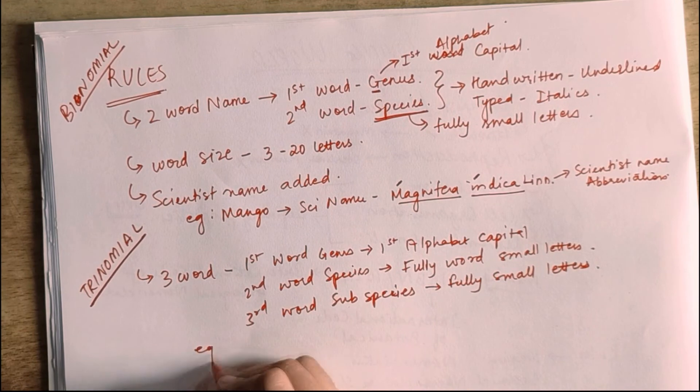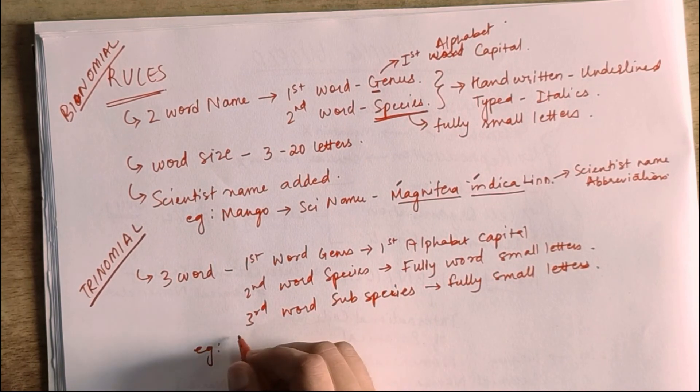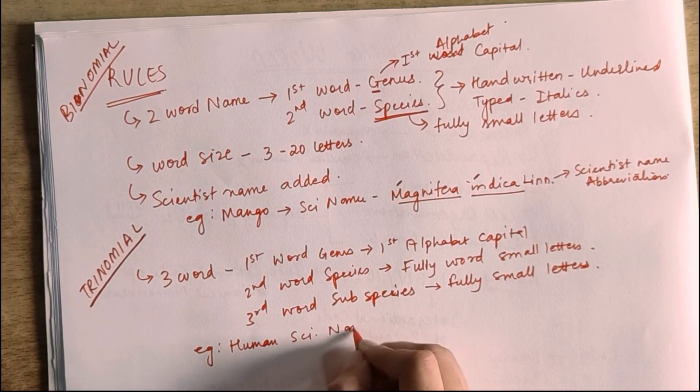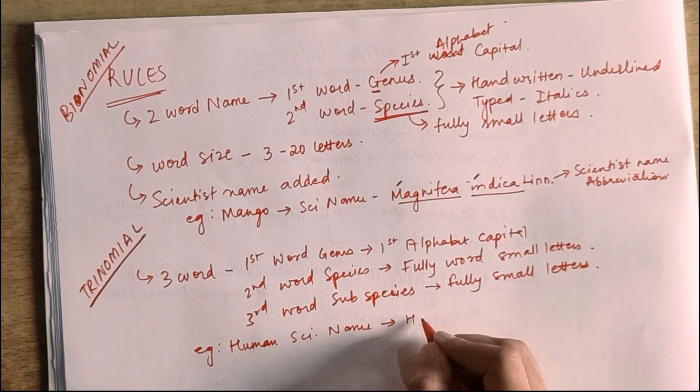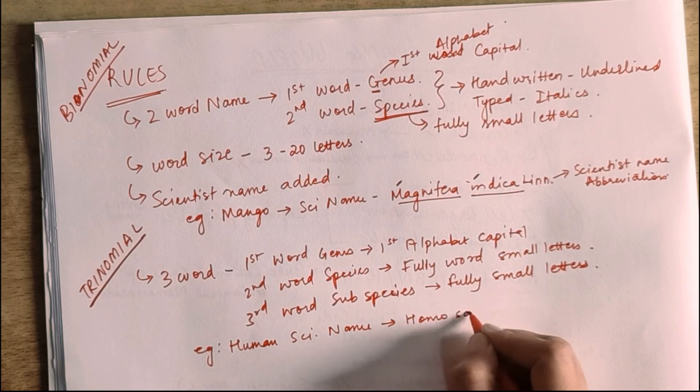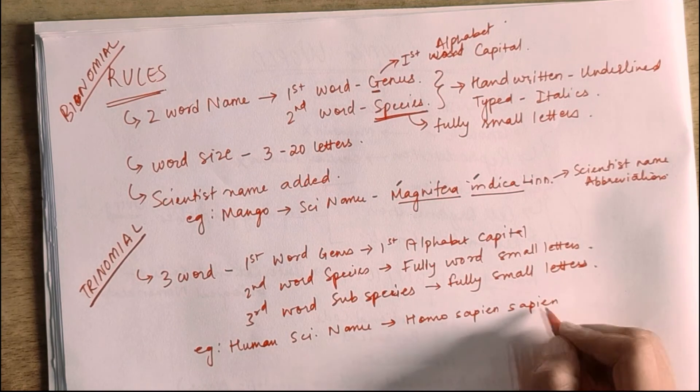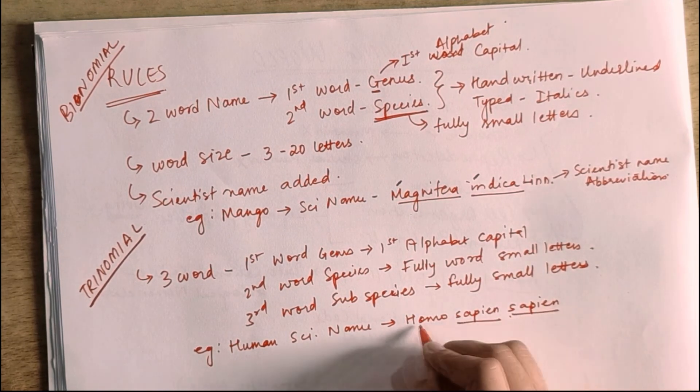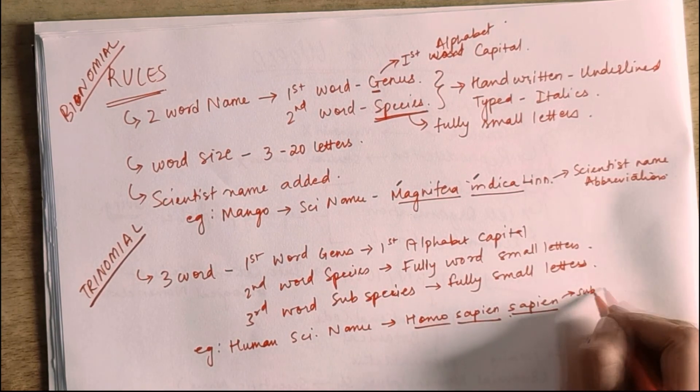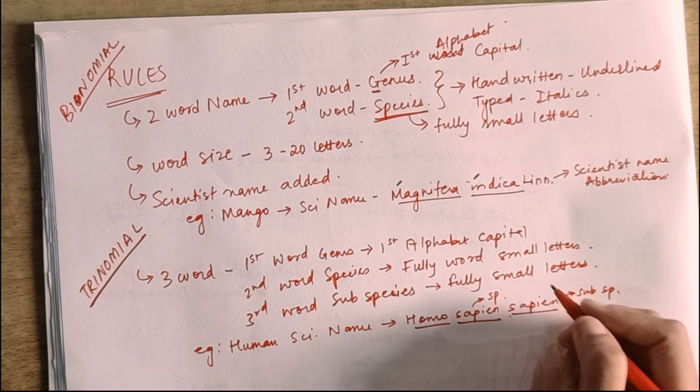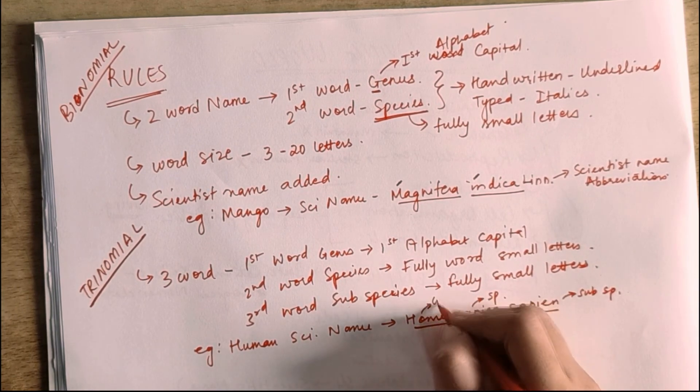Now, let's see the example. The example comes from humans' scientific name. Humans' scientific name is Homo sapiens sapiens. Now, the second sapiens added is the subspecies. The first sapiens is the species, and this is the genus.